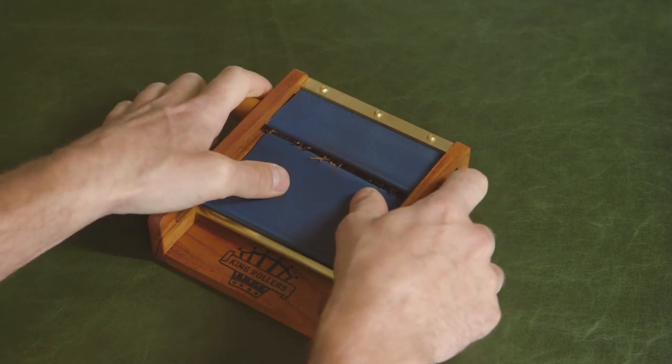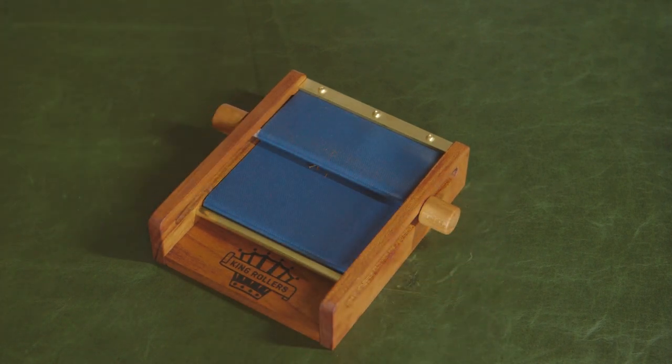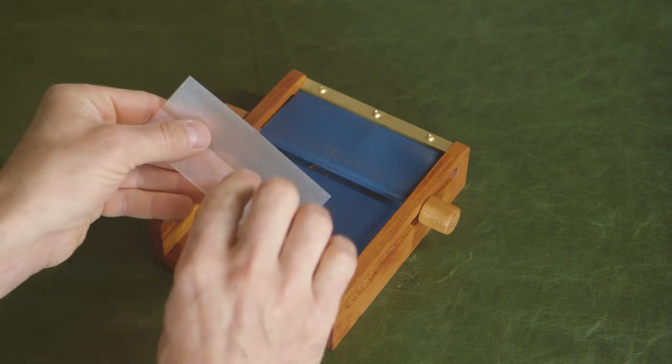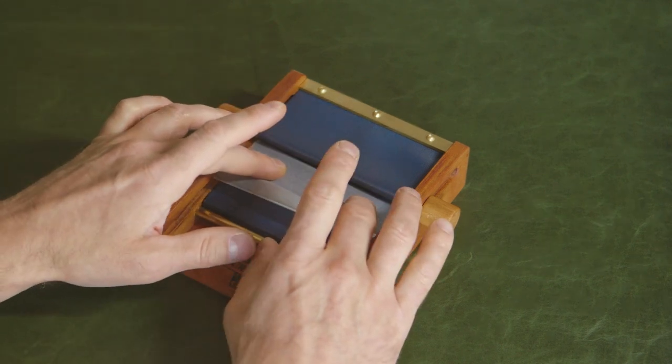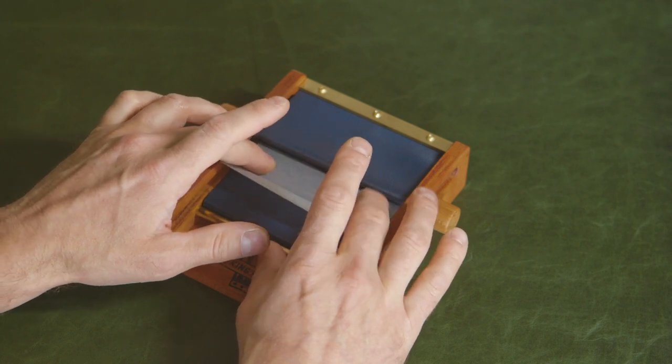Use your thumbs to slide the cloth away from you, removing any slack. Now slide the rod towards you to close the pocket, while continuing to push the cloth away with your thumbs. Depending on how tight it is, it can also help to roll the rod handles away from you as you are pulling them towards you.